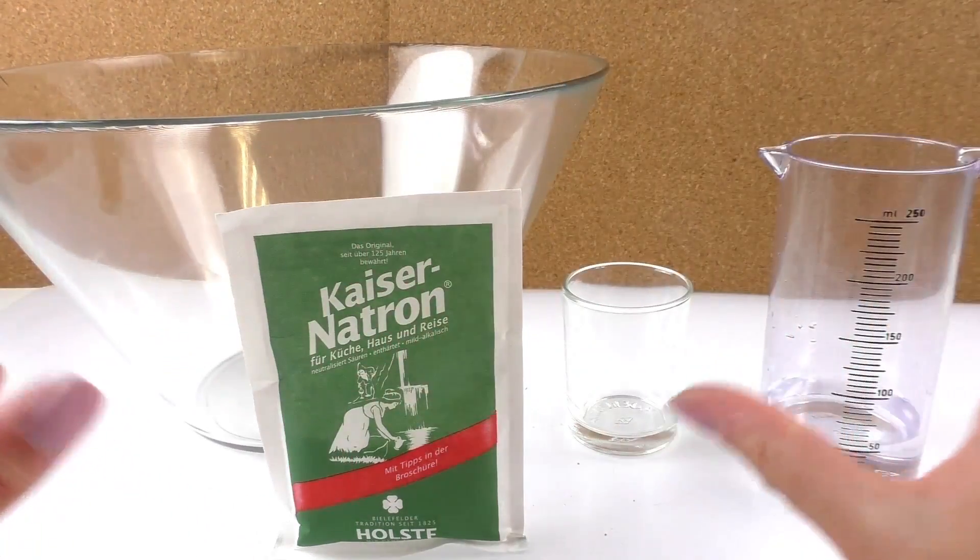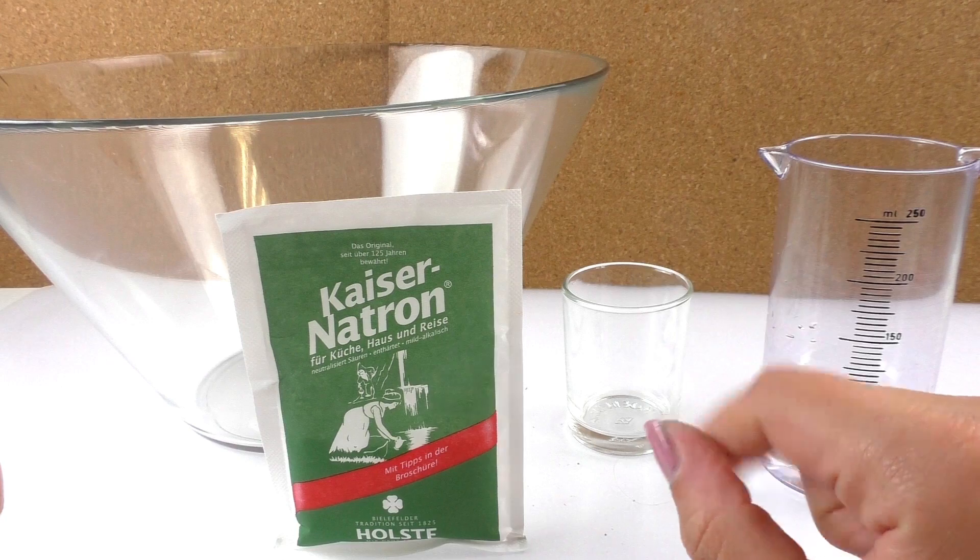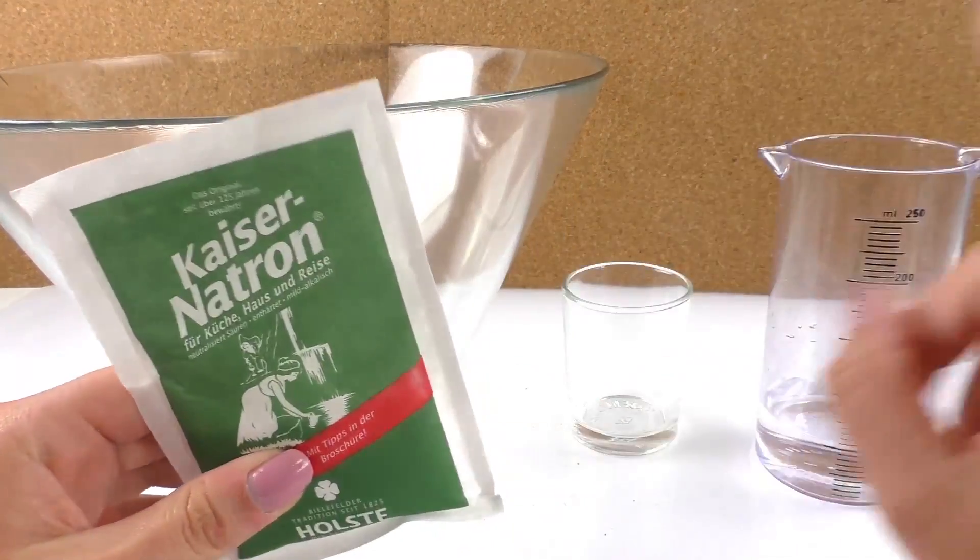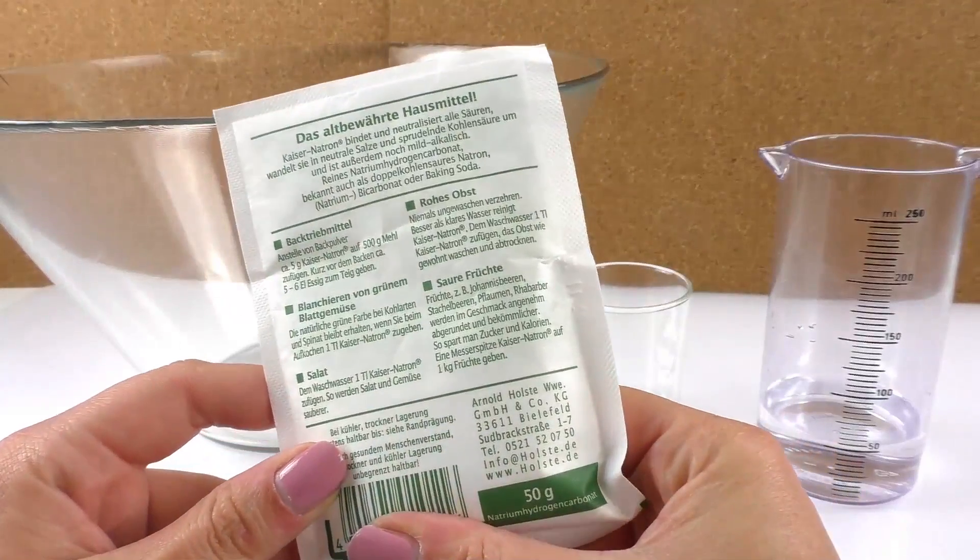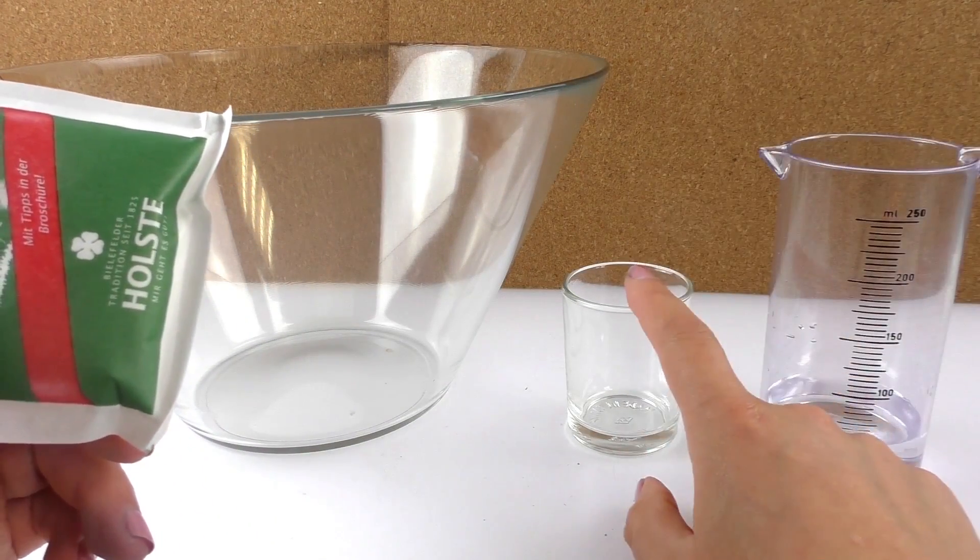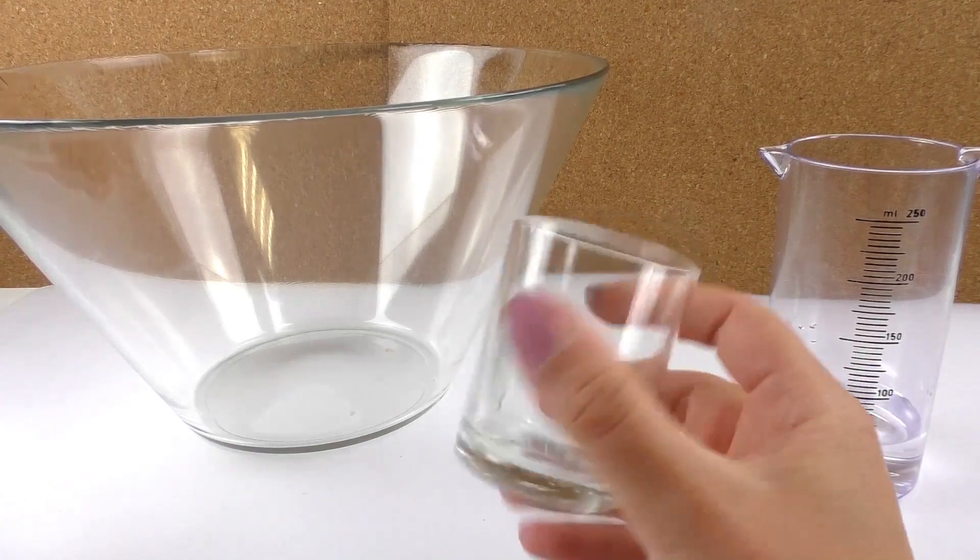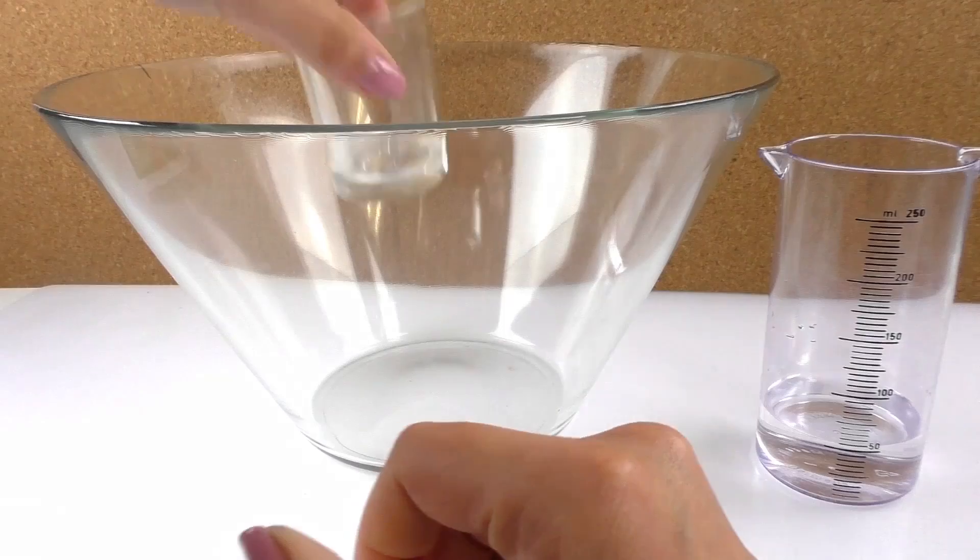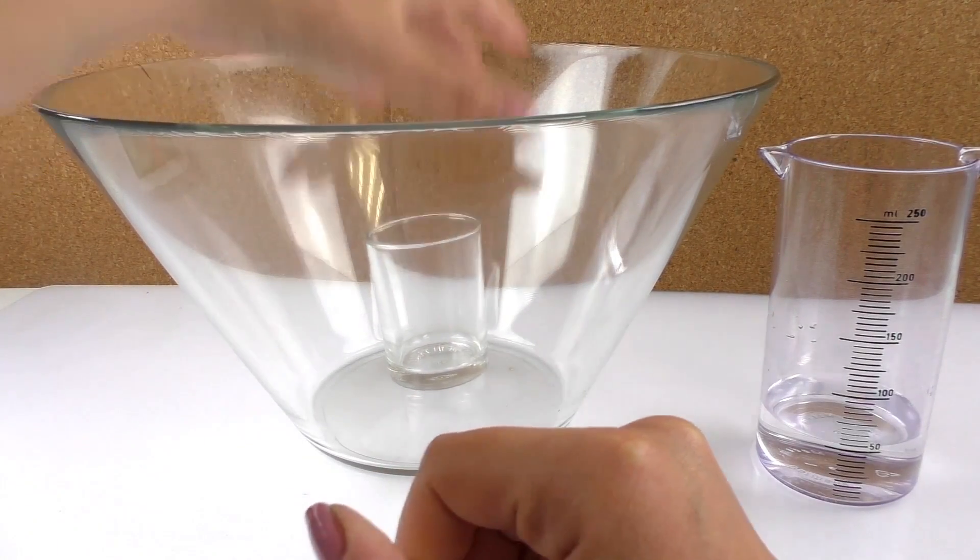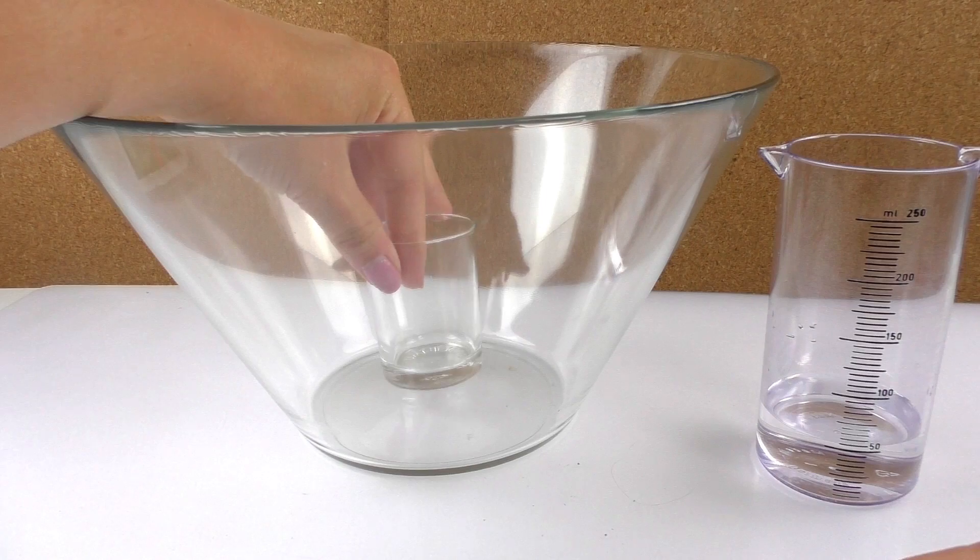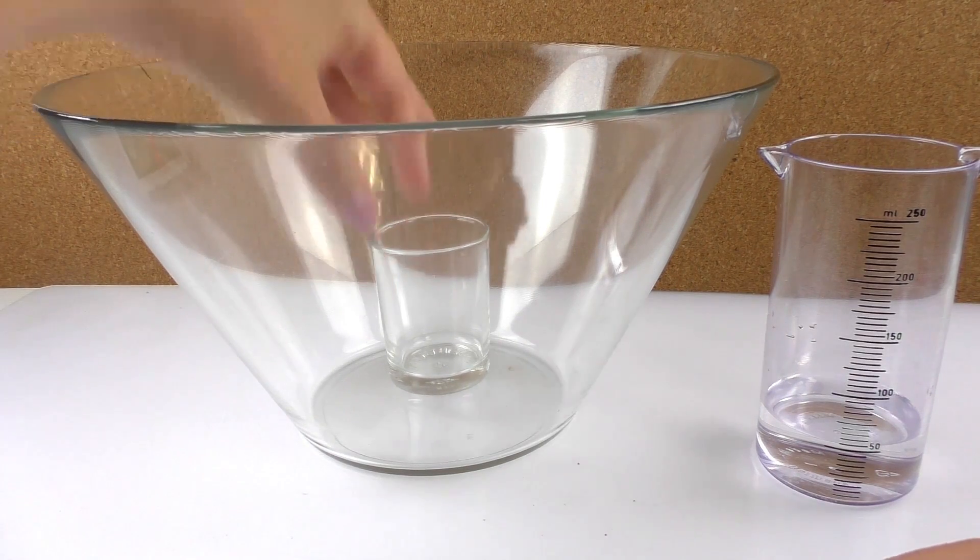Here we have 50 grams of baking soda and 50 milliliters of vinegar. I have this small glass where everything is going to take place. So we're going to put the glass inside the bowl. Oh, I hope it stays in the middle. There we go.